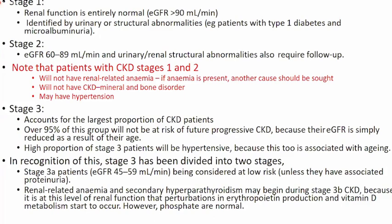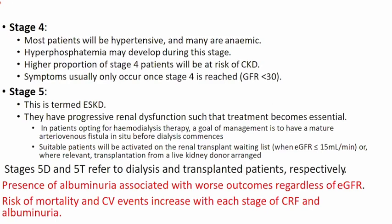Stage 3B patients (GFR 30–44) have a high risk of progressing to end-stage kidney disease. They may present with CKD complications of anemia and hyperparathyroidism, since dysfunctional erythropoiesis and dysfunctional vitamin D metabolism begin occurring at a GFR of 30–45. Stage four patients (GFR 15–29) have complications including anemia and hyperphosphatemia, are usually hypertensive, and a high percentage will progress to end-stage kidney disease. Stage five is a GFR less than 15.